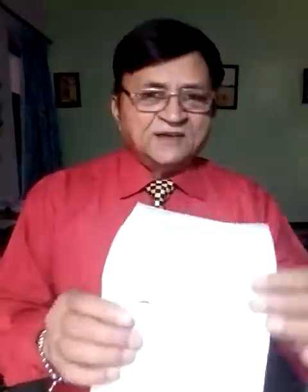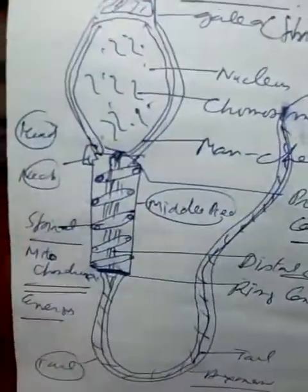Then the zygote undergoes cleavage after fertilization, which we will study tomorrow. Please study this chapter very well — it is very interesting, the third chapter of the first unit. After the fourth chapter I will revise every chapter. Meanwhile, you make your diagrams and notes. Okay, bye, thank you.